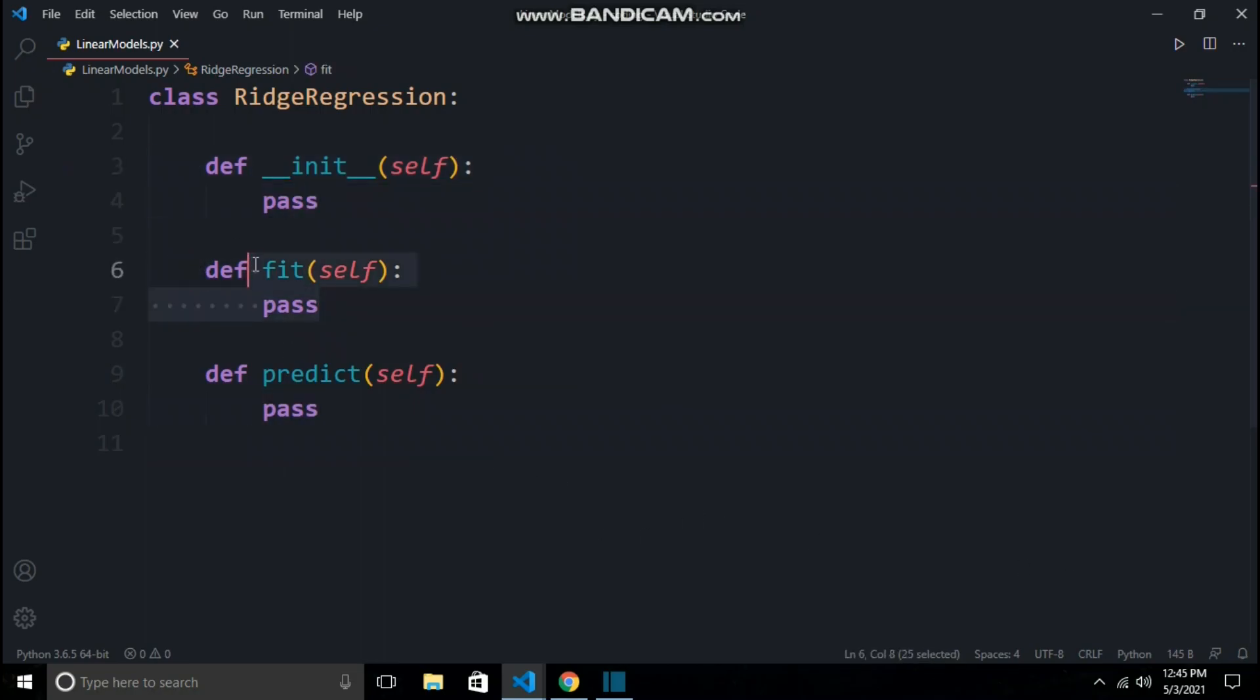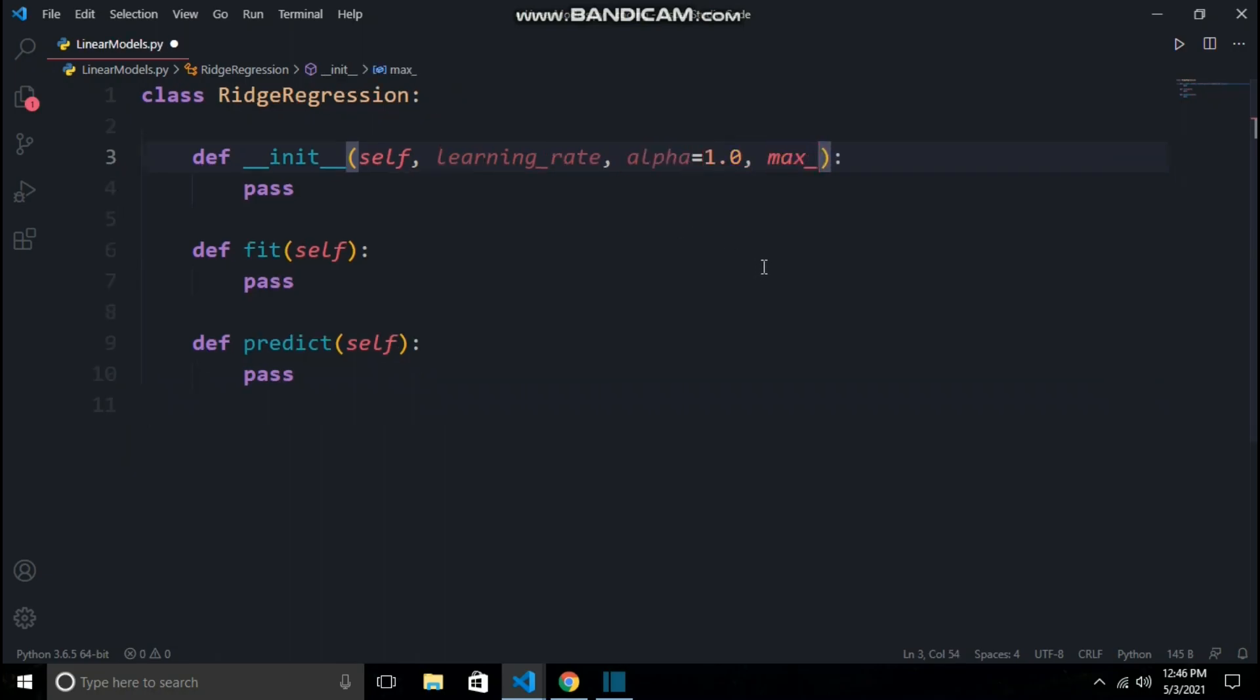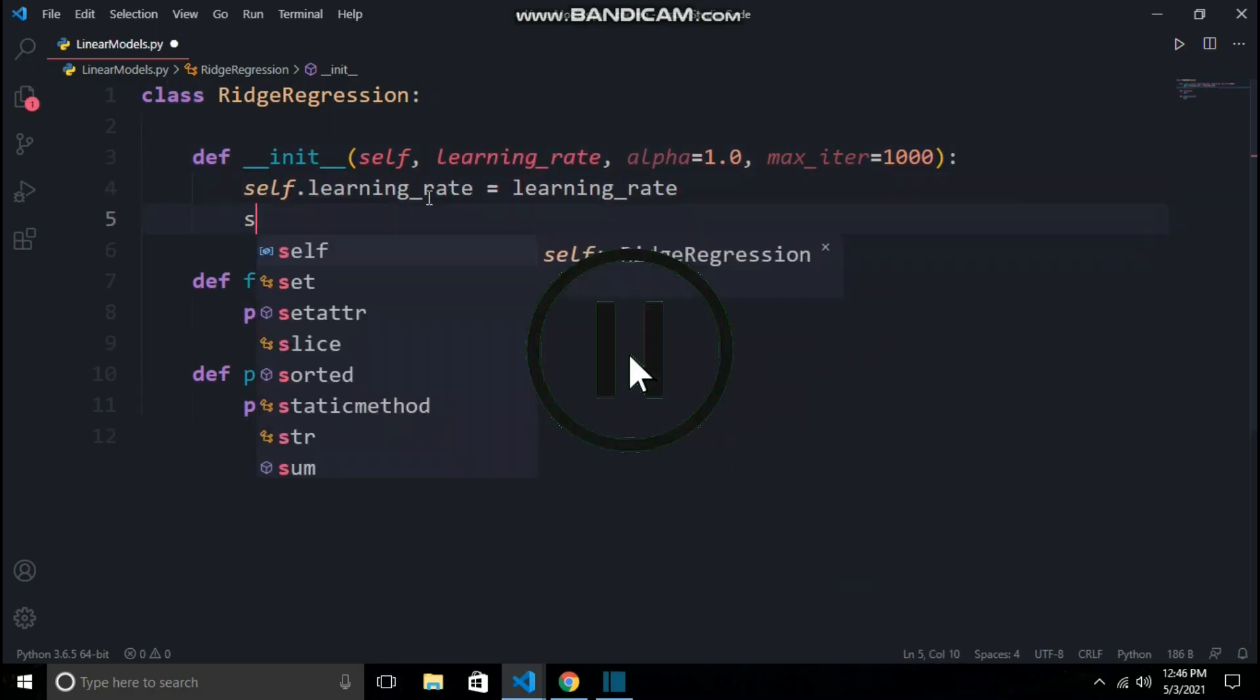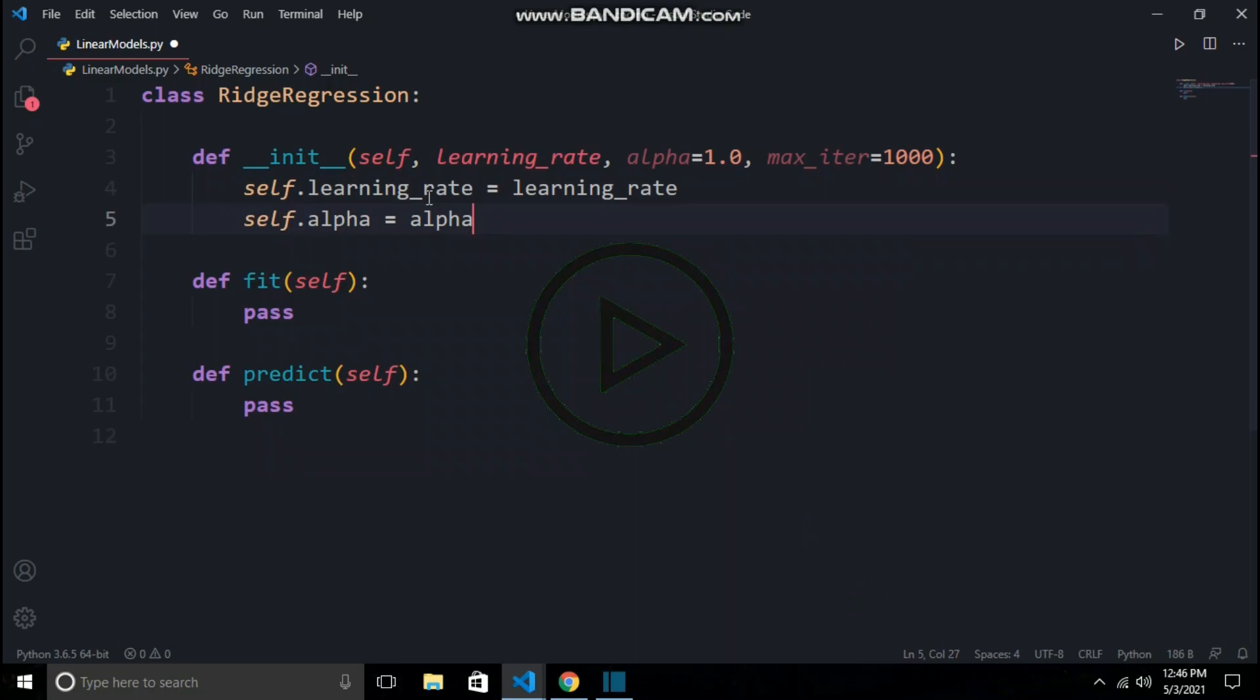Init will accept hyper parameter values which will be used in training. Fit will take x and y values and train our algorithm using gradient descent. And last, the predict function will predict the incoming x values. Now let us list those parameters. Here I have named a hyper parameter name alpha, but in the mathematics section we write it as lambda. Scikit-learn names it as alpha so I have done the same.